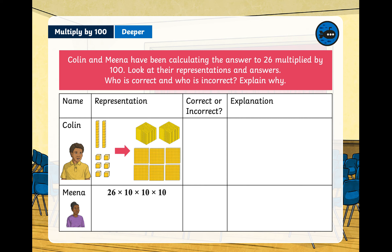Colin and Mina have been calculating the answer to 26 multiplied by 100. Look at their representations and answers — who is correct and who is incorrect? Can you explain why? Pause the video now, have a look at the question, work out what the answer is, and press play again when you're ready.